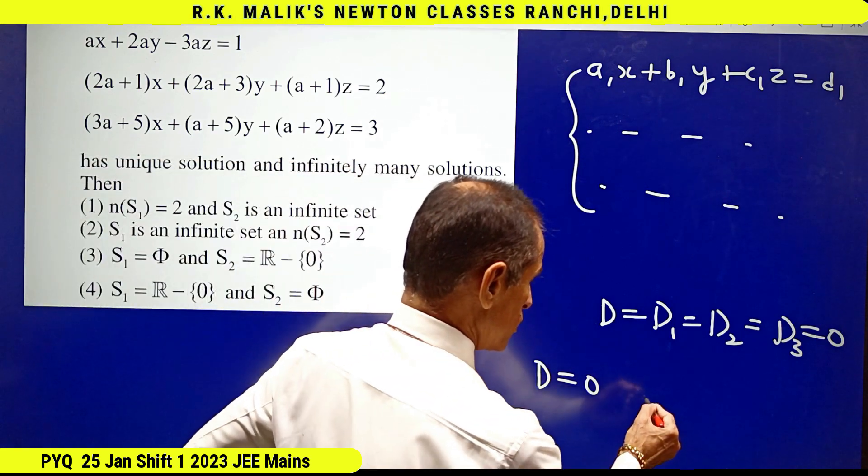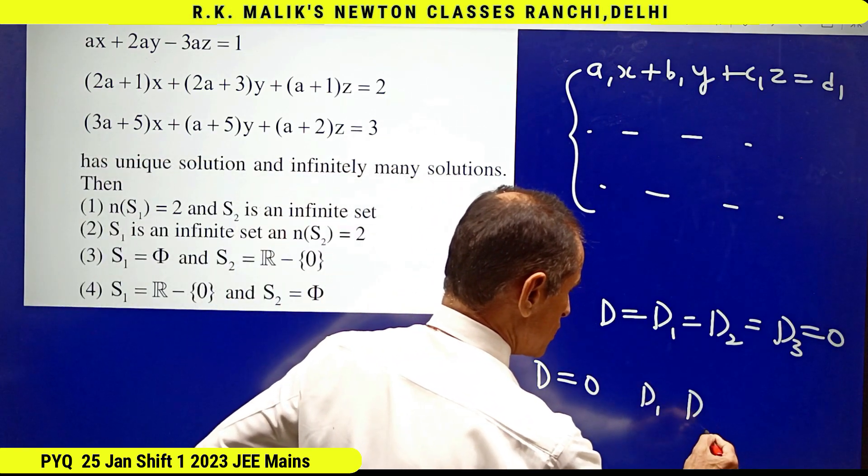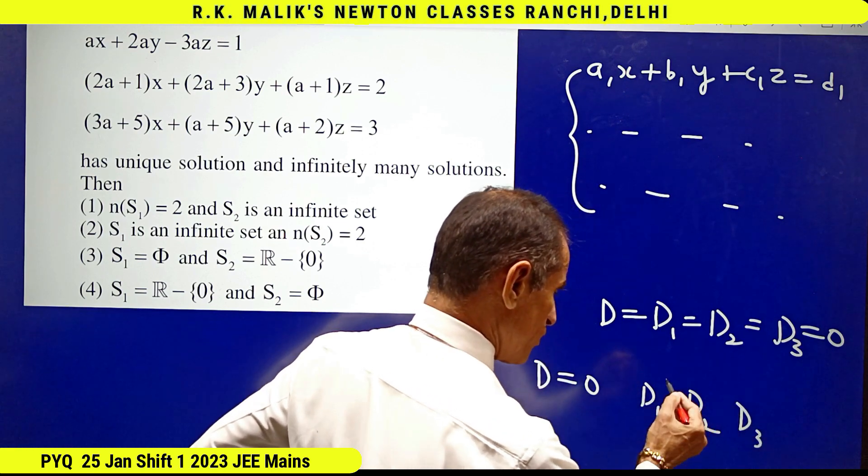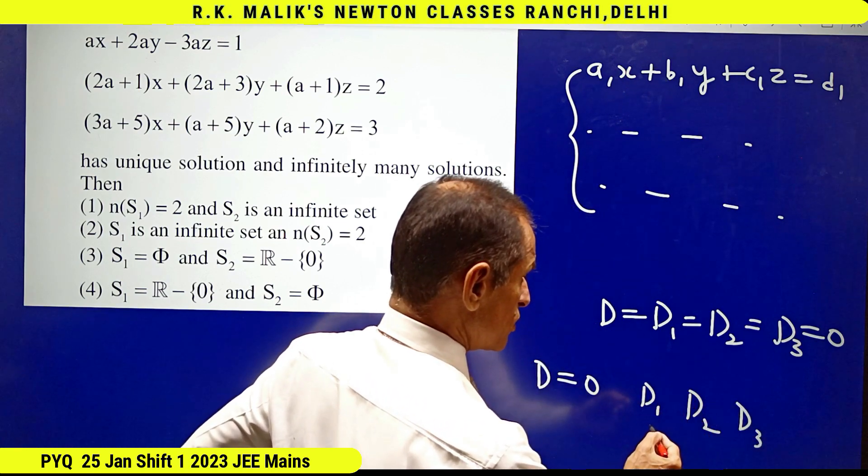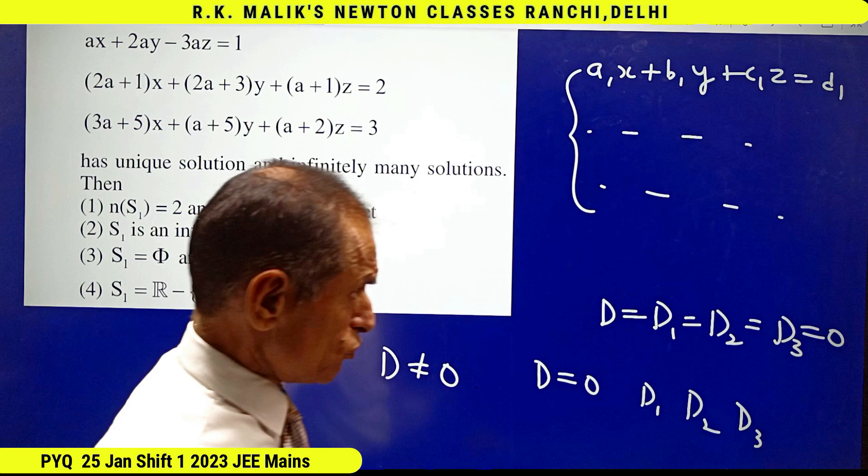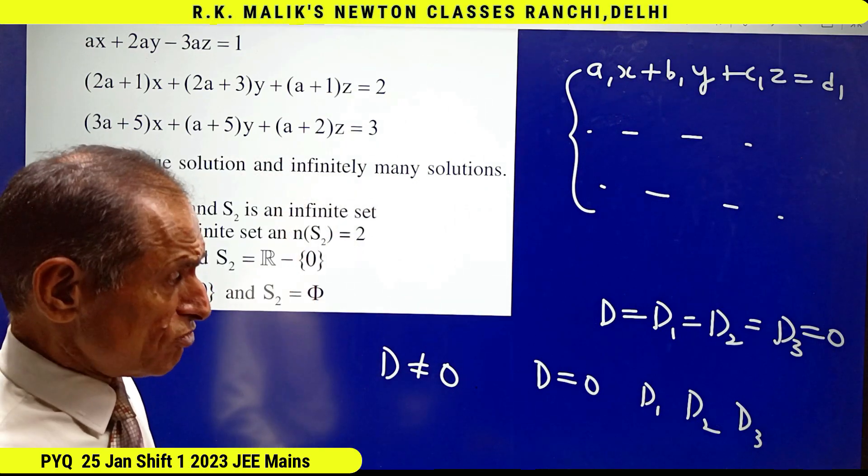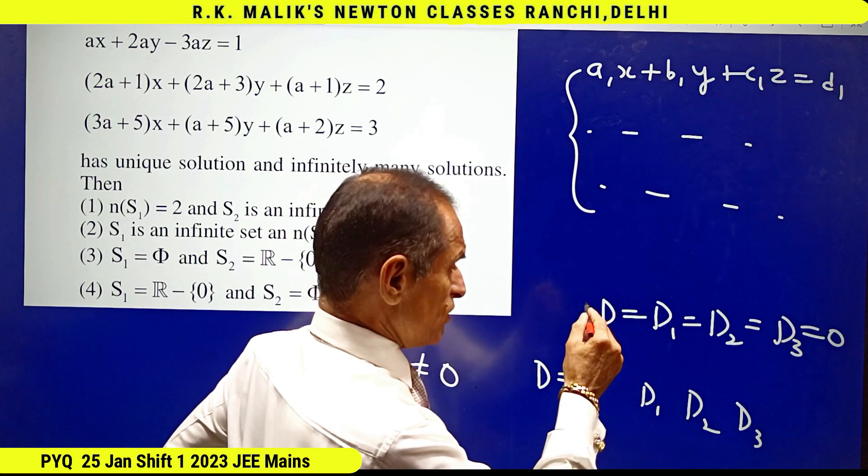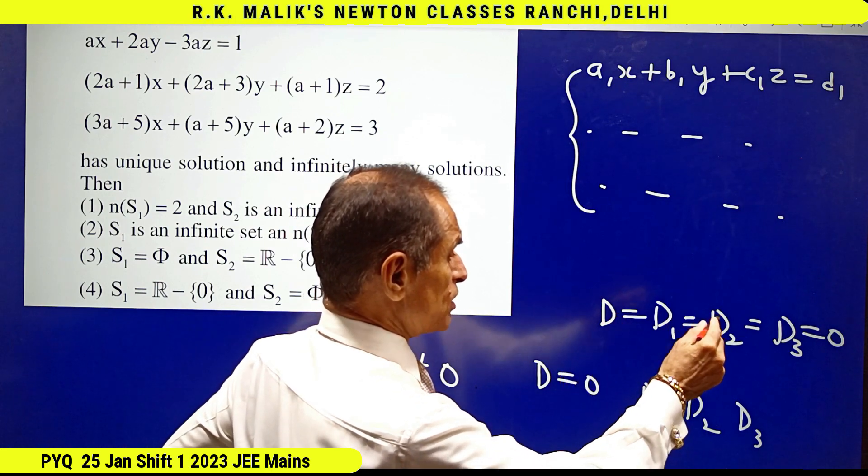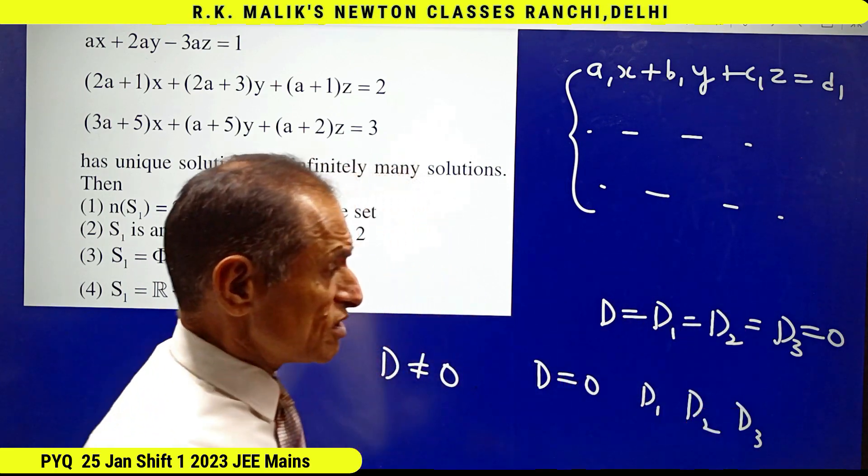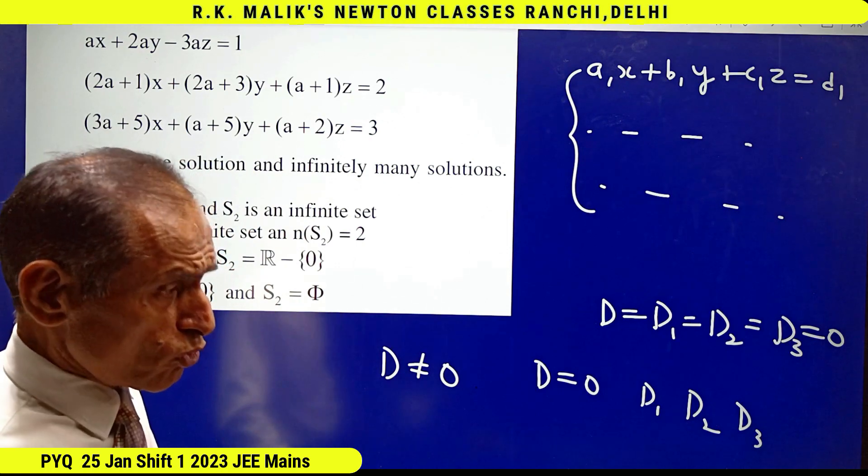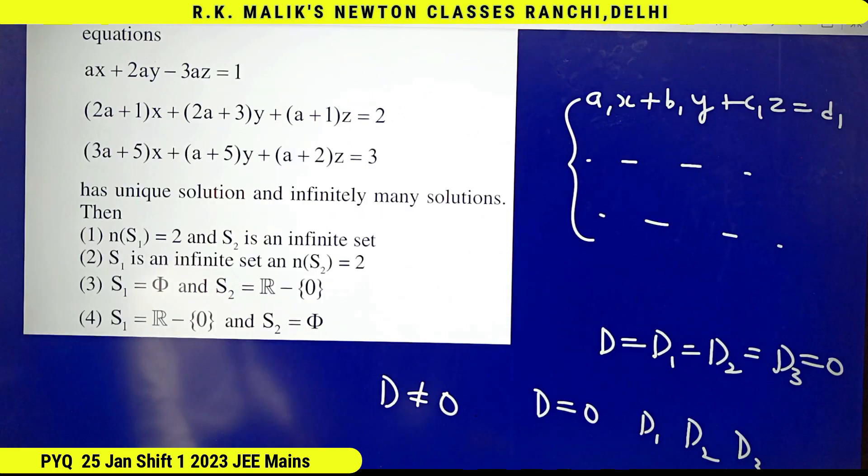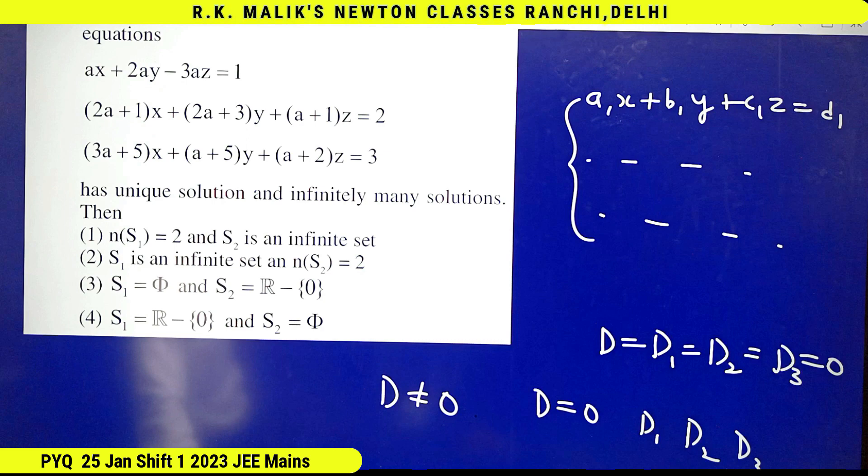That is, after D equal 0, out of D₁, D₂, D₃, if even one is non-zero, the equation will have no solution. Note that there are situations in which D, D₁, D₂, D₃ all are zero, still the equations have no solution, but that situation is not happening here, therefore I am not going in the detail of that.